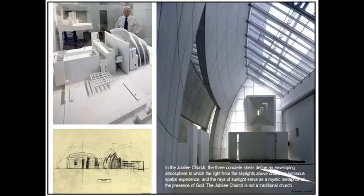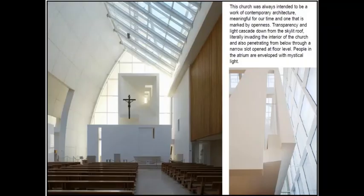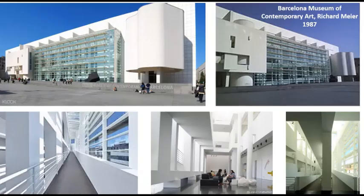Three concrete shells define an enveloping atmosphere in which light from skylights above creates an illuminated spatial experience. Rays of sunlight create a mystic metaphor showing the presence of God inside the church. The Jubilee Church was always intended to be a work of contemporary architecture meaningful for our times, marked by openness, transparency, and light. Light cascades down through the skylight roof, literally invading the interior, and also penetrating from below through a narrow slit at floor level.